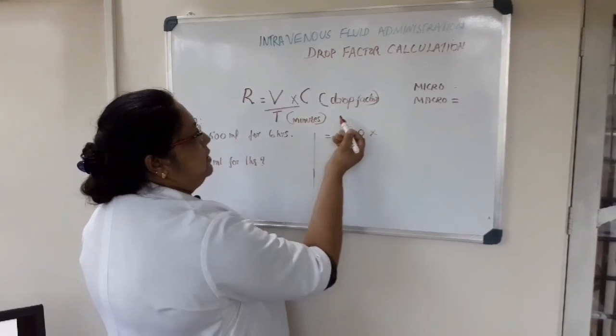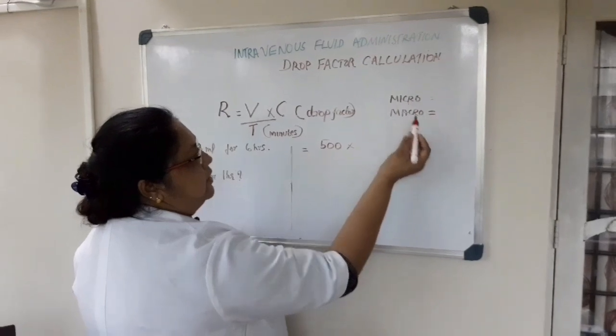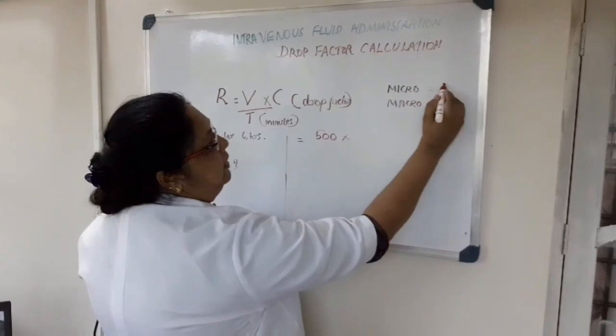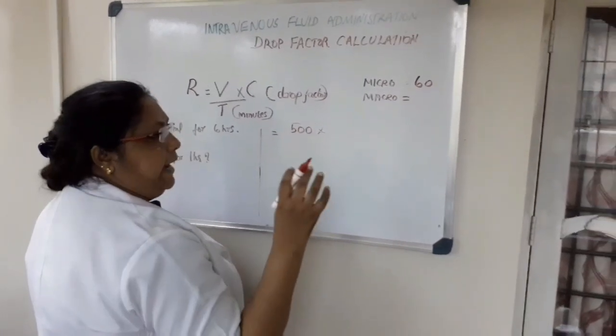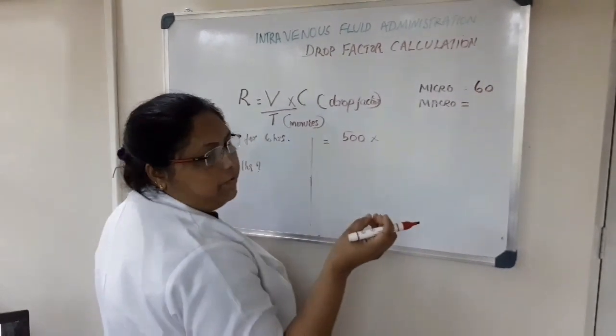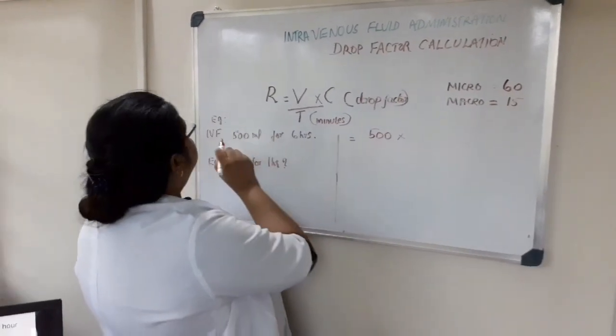Rate is equal to volume divided by time in minutes into the drop factor or calibration. Calibrations are two types: macro set or micro set. If it is the micro set means small drops are coming, one ml is considered as 60 drops. Macro set means big drops usually given for adults and big children, it is 15. Now we can move to one example.